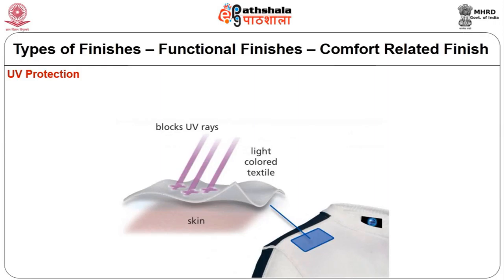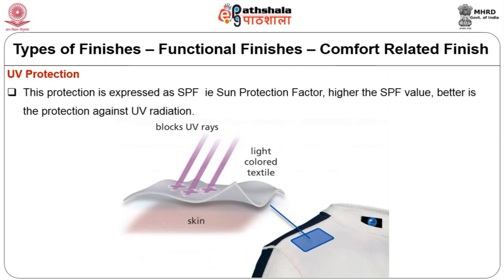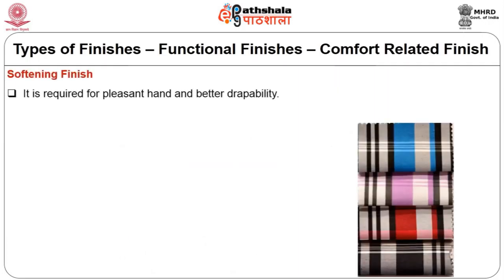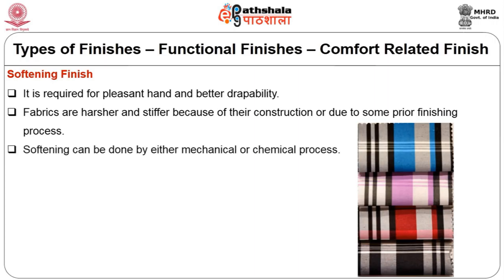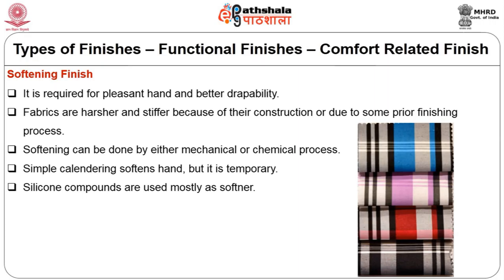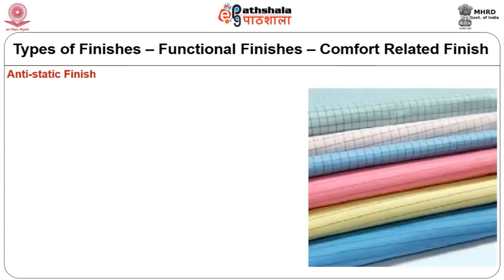UV protection: fabric treated with UV absorbers deflects harmful ultraviolet rays from the sun, reducing a person's UV exposure and protecting skin from damage. This protection is expressed as SPF (sun protection factor) — the higher the SPF value, the better the protection. Softening finish is required for pleasant hand and better drapability; softening can be done by mechanical or chemical process. Simple calendaring softens hand but is temporary (mechanical finish); silicone compounds are used mostly as chemical softeners.